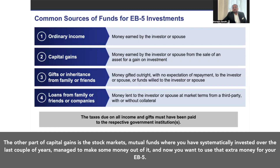The other part of capital gains is the stock markets and mutual funds, where you have systematically invested over the last couple of years, managed to make some money, and now want to use that extra money for your EB5.